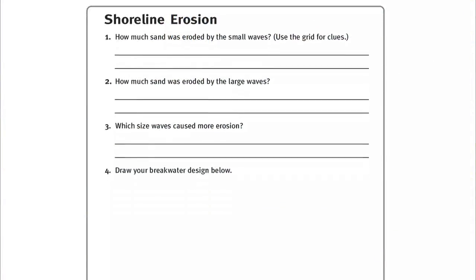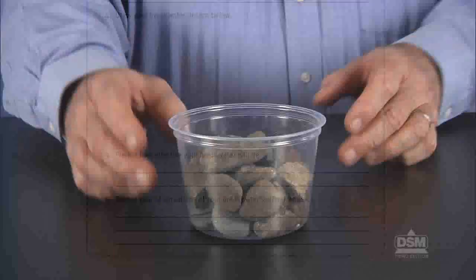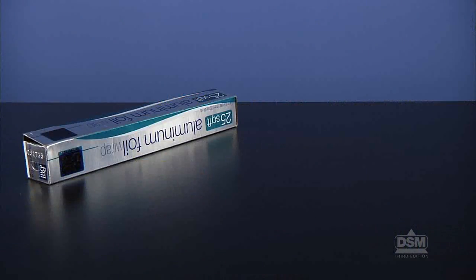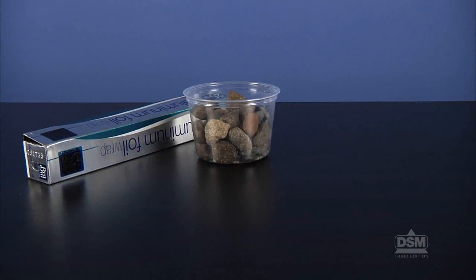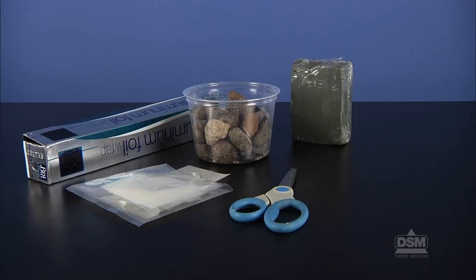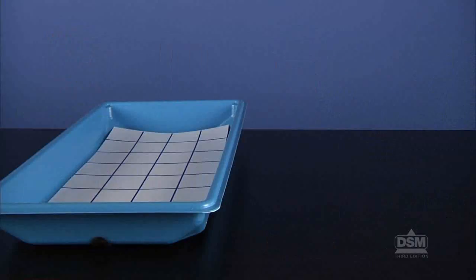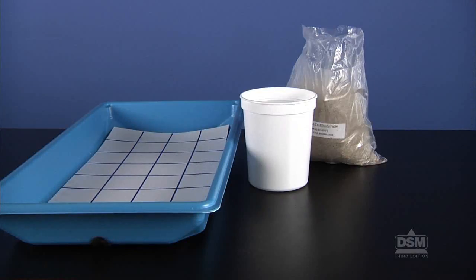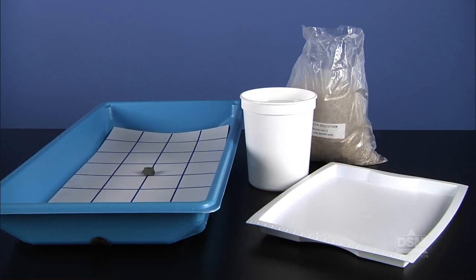To prepare for the activity, make a copy of Activity 10 for each student. Collect several cups of assorted sized pebbles for students to use in their breakwaters. Place the following items at a distribution station: a roll of aluminum foil, pebbles of assorted sizes, a package of nylon mesh, a pair of scissors, a block of modeling clay, and wooden sticks. Each team of four will need their stream table, a 1 liter container filled with tap water, approximately 6 pounds of sand, a piece of modeling clay, and a plastic tray.